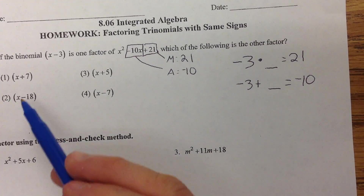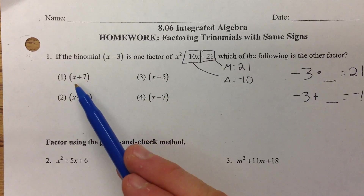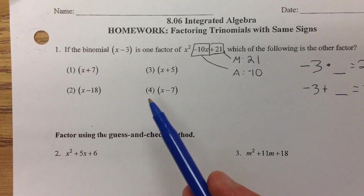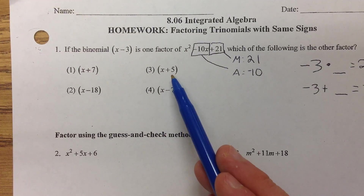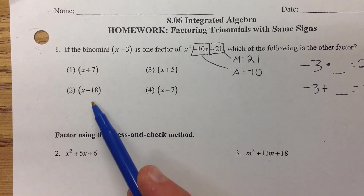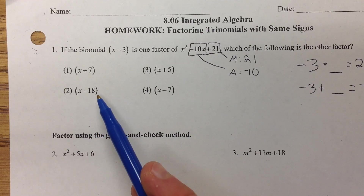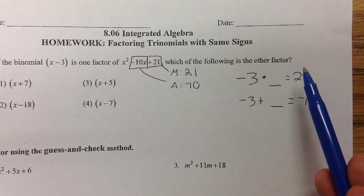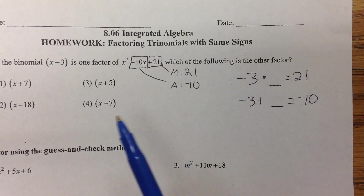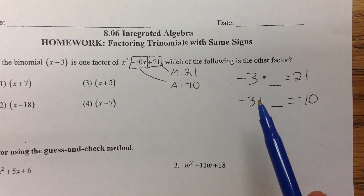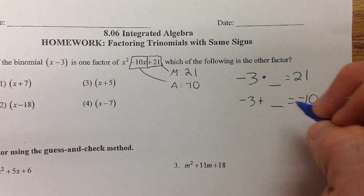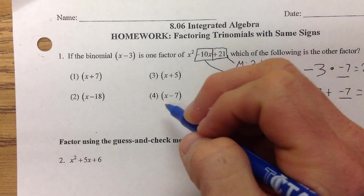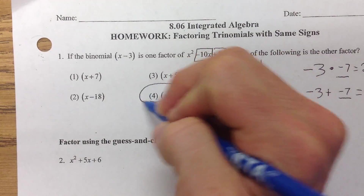Going through the options: positive 7 — nope, positive 7 times negative 3 is negative 21, I need a positive 21. Negative 3 times 5 is negative 15, not going to work. Negative 3 times negative 18 is positive 54, not going to work. Negative 3 times negative 7 — yes, that would be positive 21. Negative 3 plus negative 7 would be negative 10. So negative 7 is the number that works for both, so the answer is x minus 7.